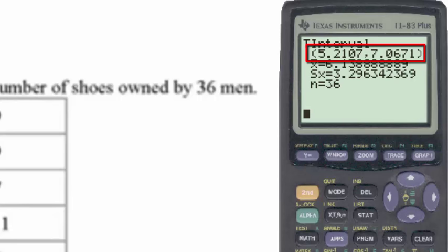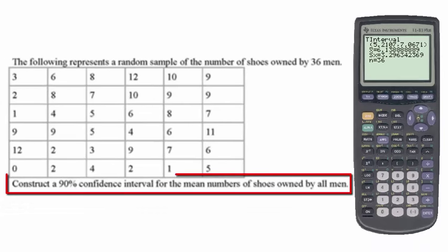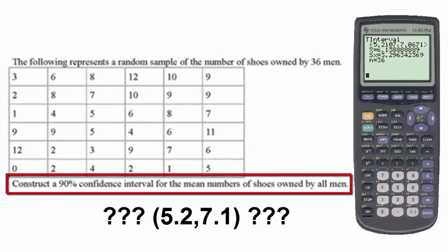How to interpret this interval has to make sense in terms of the original problem. It wouldn't make much sense to say that all men own between 5.2 and 7.1 pairs of shoes, simply because you either have one pair of shoes or two pairs of shoes.